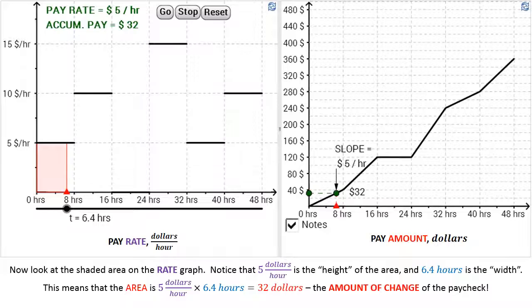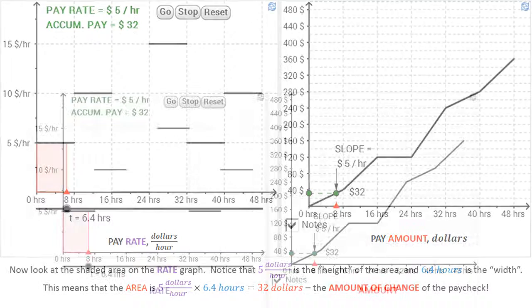And so we have this relationship now between these two graphs, where the area on the left gives us the amount on the right, and the slope on the right gives us the height on the left.